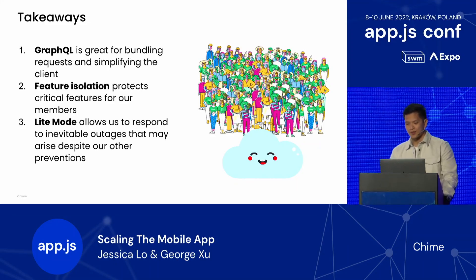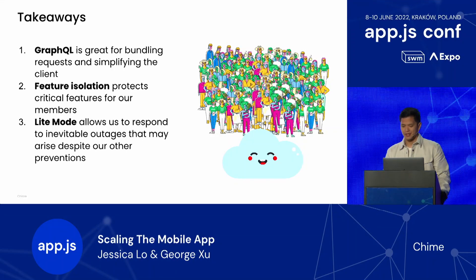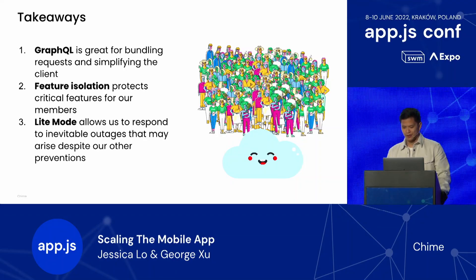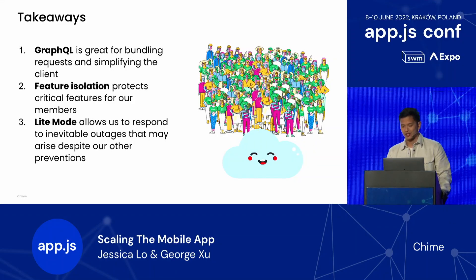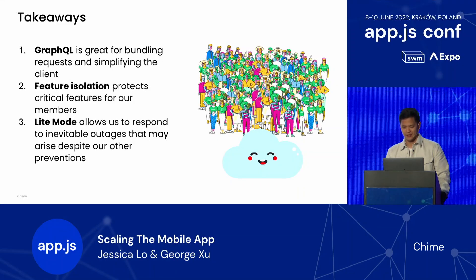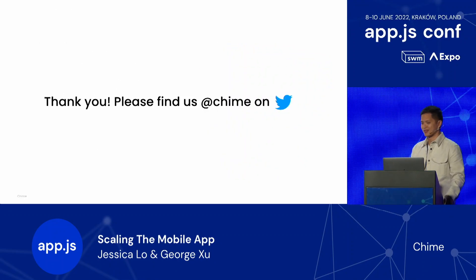To summarize our takeaways: today we've talked about how GraphQL is great for bundling requests and simplifying the client, how we use feature isolation to protect critical features for our members, and why we built Light Mode and how it allows us to respond to inevitable outages that may arise despite other preventions. All these items work in tandem to make sure that the Chime app is both a fine and available experience for our members. Thanks for listening in — please find us at Chime on Twitter.